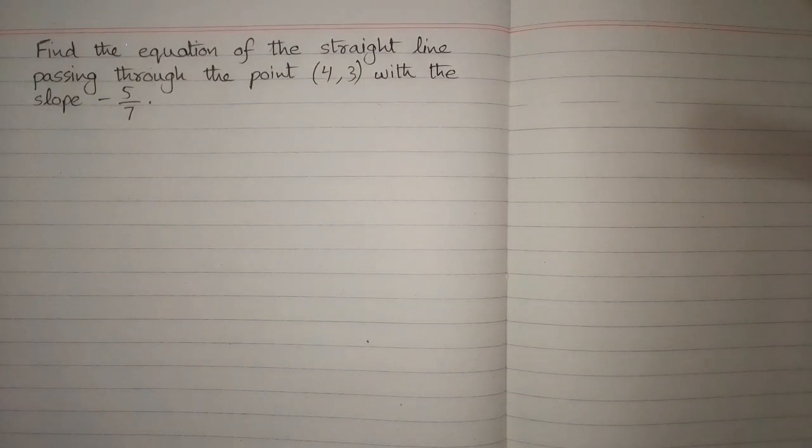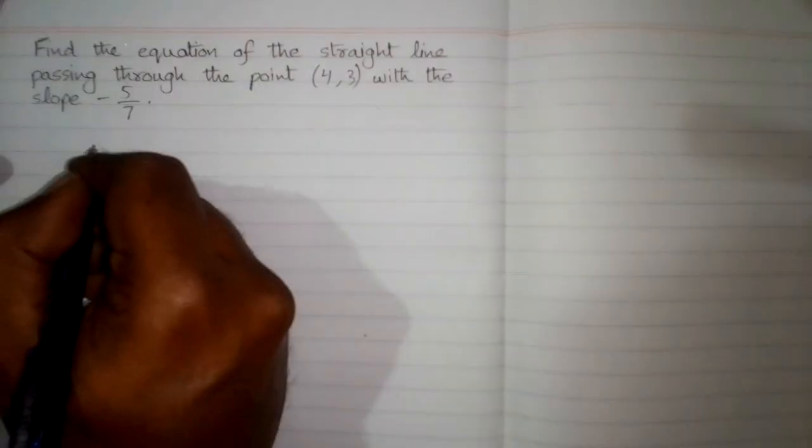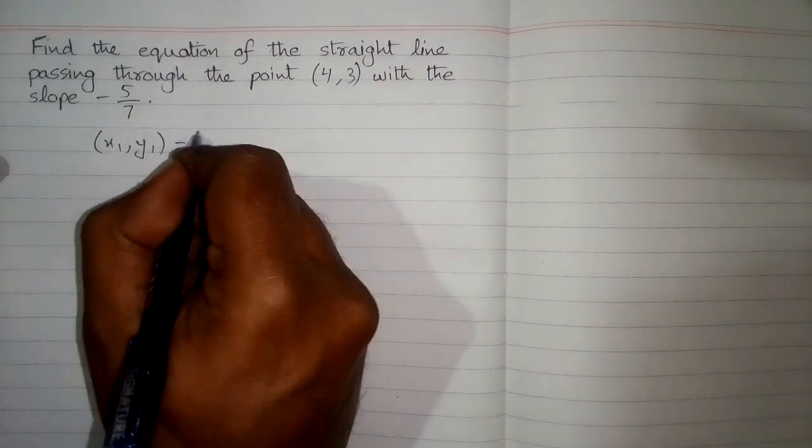In this video, we will find the equation of the straight line passing through the point (4,3) with the slope -5/7. First of all, we will suppose that this point is (x1,y1).